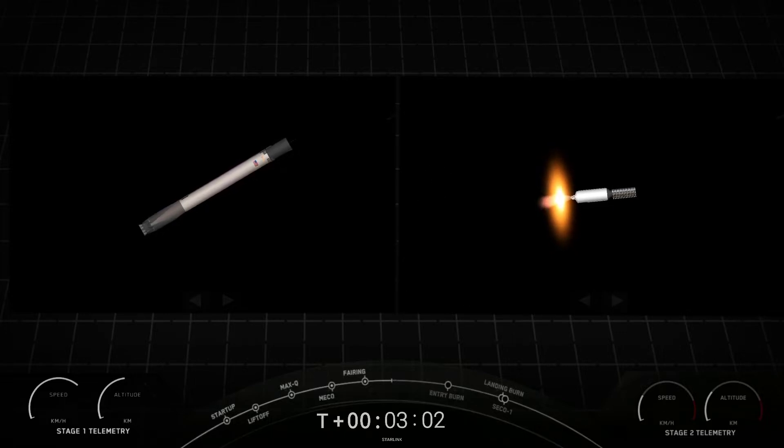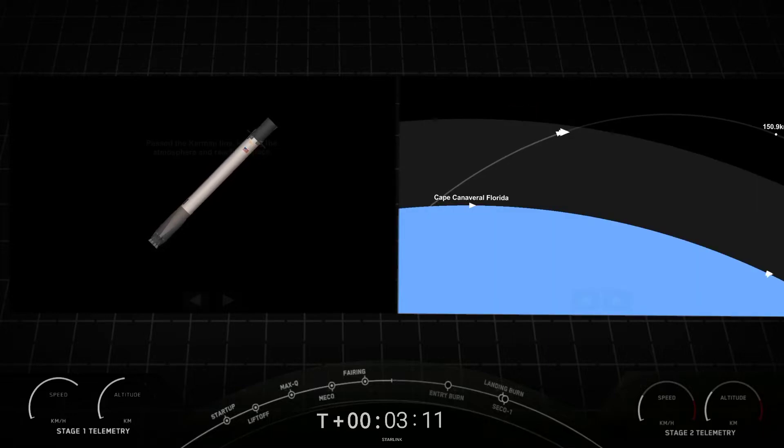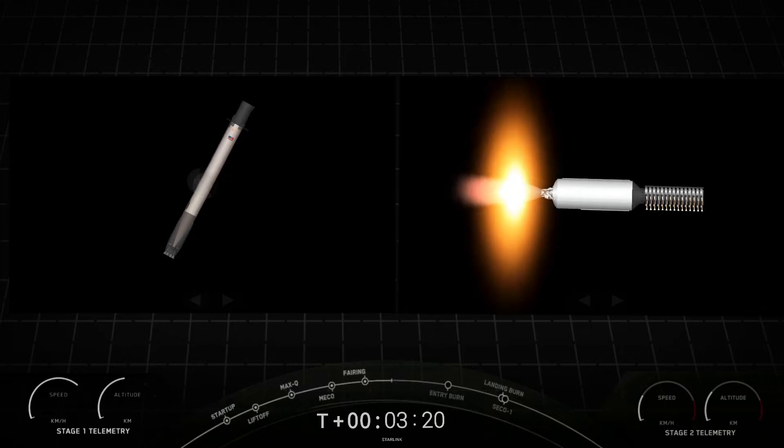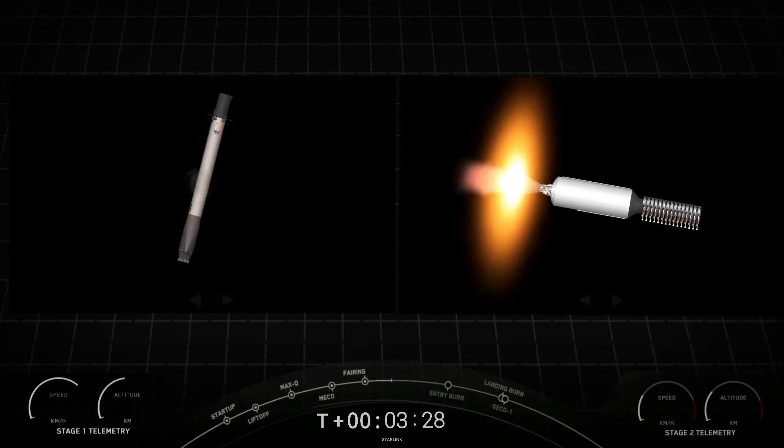And some incredible views there. We just had MECO stage separation. You can see those fairing halves on your right-hand screen falling back to Earth. Both vehicles are following nominal trajectories. And got some nominal call-outs. The MVAC engine lit up on the second stage. The first stage grid fins have deployed. So on your left-hand screen you're looking at a view from the first stage. On your right-hand screen you're looking at a view of the MVAC engine on the second stage.